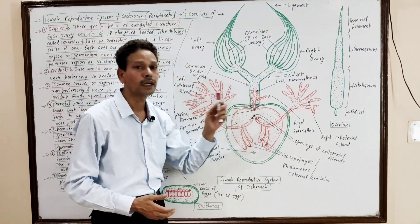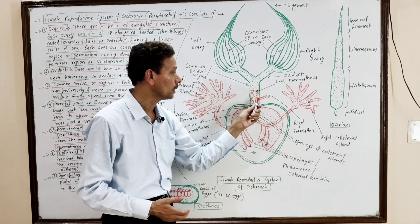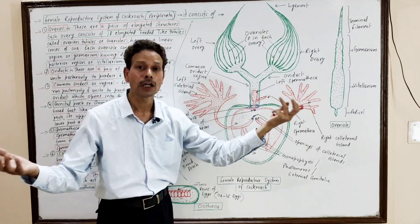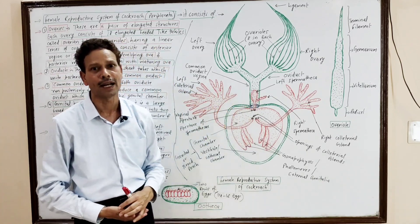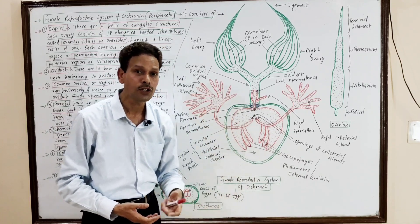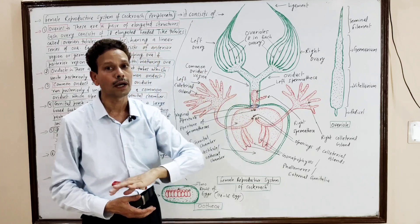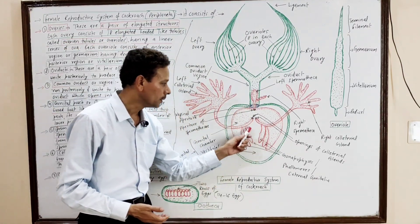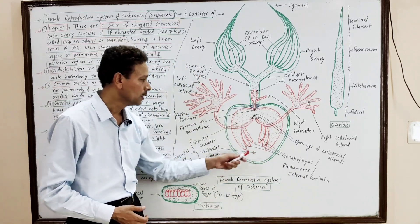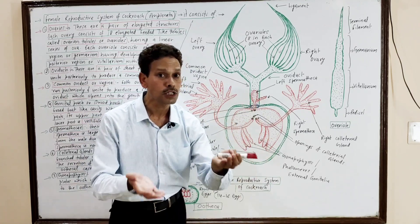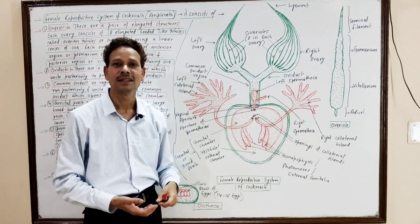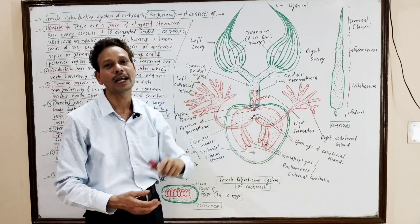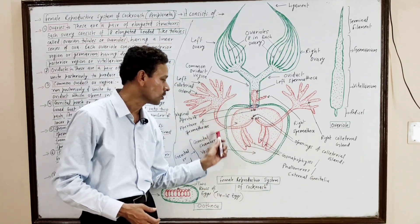The vagina opens into the anterior genital chamber of the brood pouch. In the genital chamber, the spermatheca also opens — the left spermatheca is functional, while the right is non-functional and vestigial. A pair of female reproductive accessory glands called collaterial glands are present; their secretion forms the oothical case. The brood pouch has an anterior genital chamber and a posterior oothical chamber, and both collectively constitute the brood pouch.